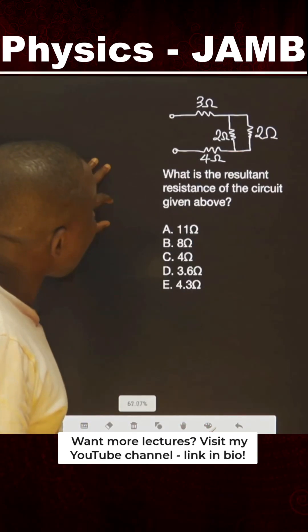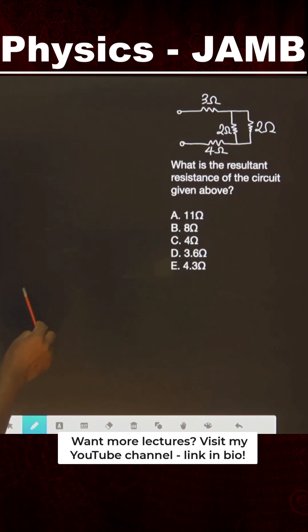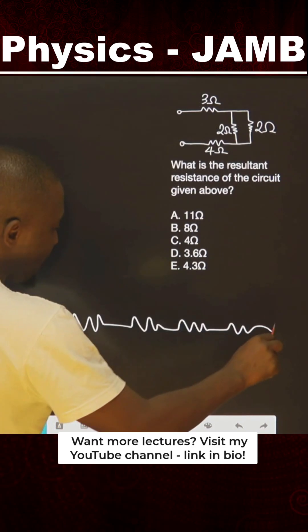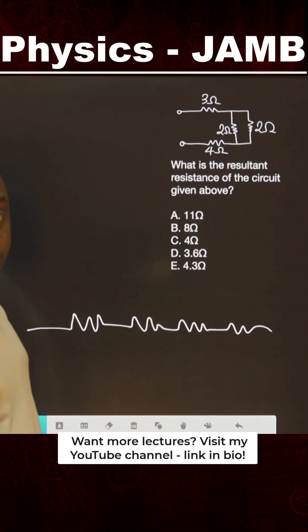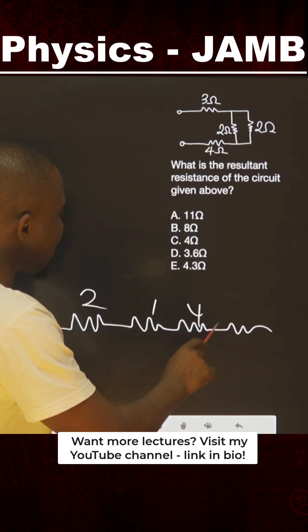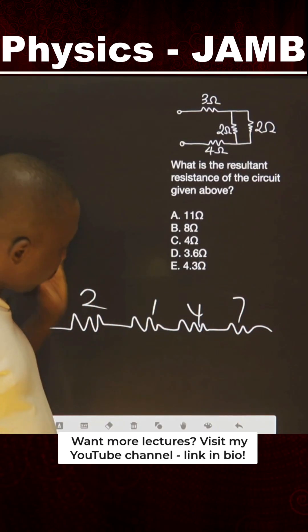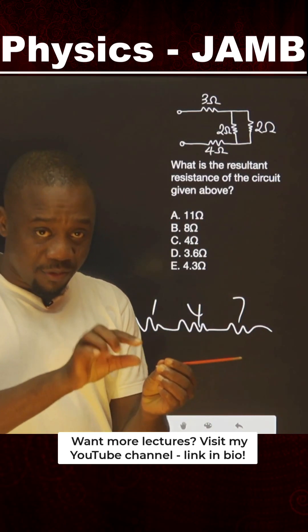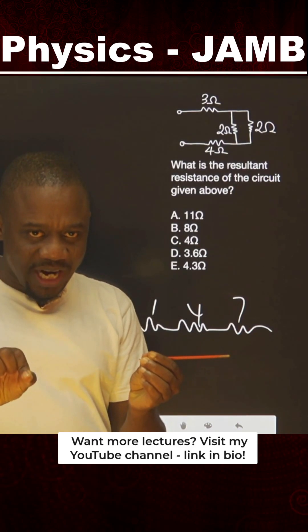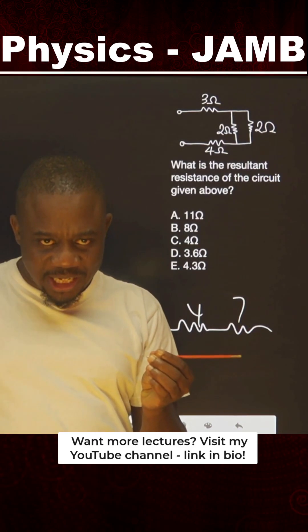What you must put at the back of your mind is when resistances are in series, this is series connection, you add them together. Assume 2Ω is here, 1Ω is here, 4Ω is here, 7Ω is here - you simply add them together. That is series connection. It's like you are joining them, one resistance connected to another resistance connected to another one.